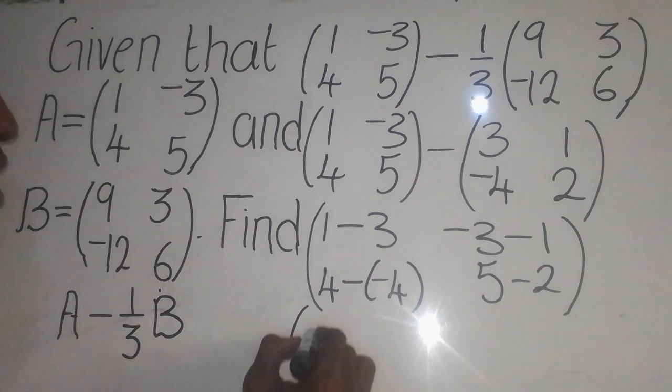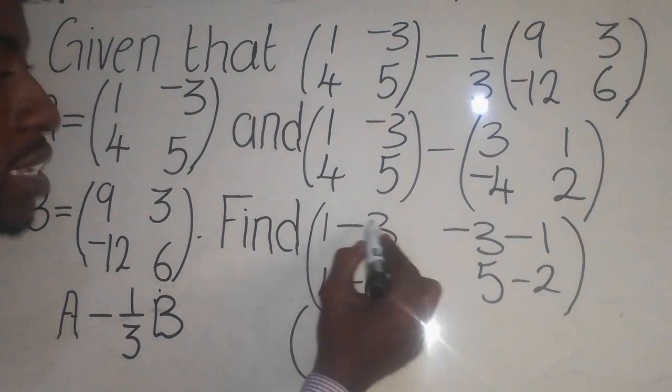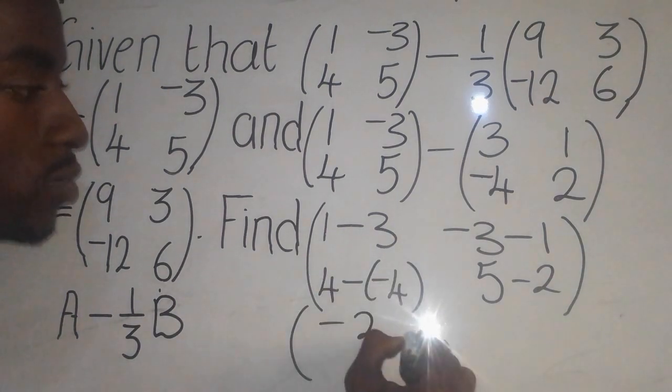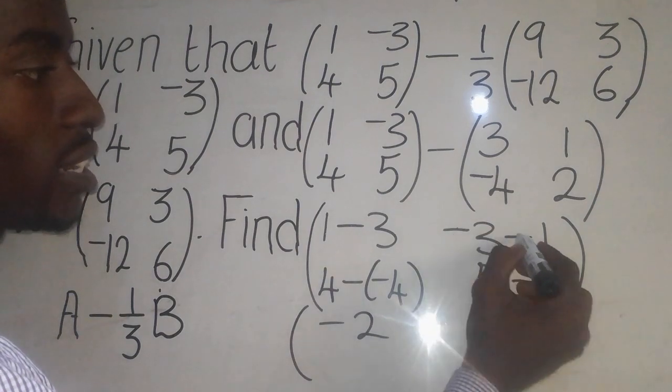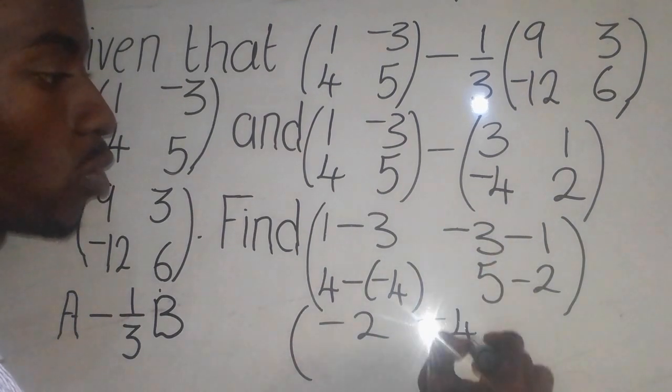1 minus 3 will give me negative 2. Negative 3, negative 1 will give me negative 4.